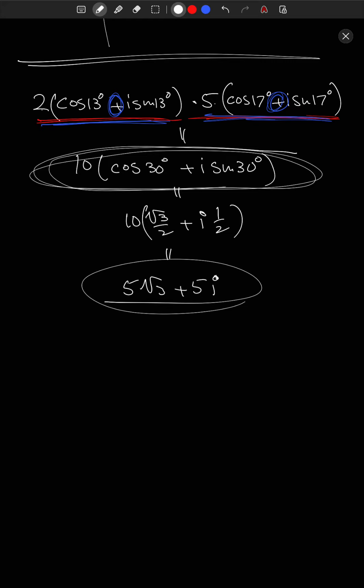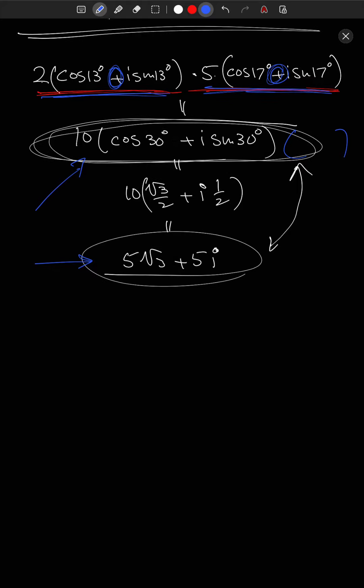In this particular example, cos(30°) = √3/2 and sin(30°) = 1/2, so this is 10(√3/2 + i · 1/2) = 5√3 + 5i in standard form. Which form you use in practice depends on the context of your application.